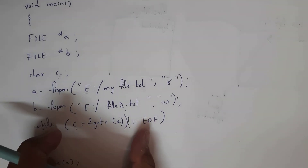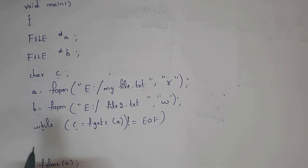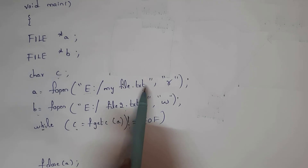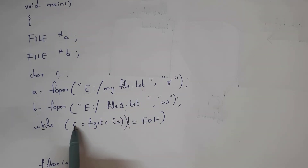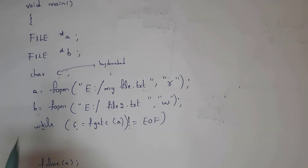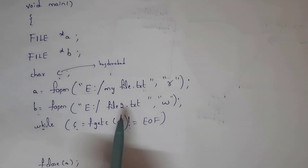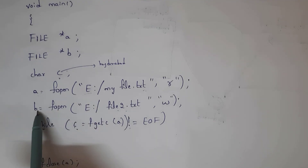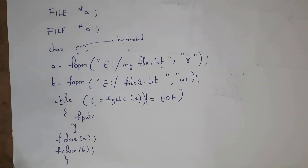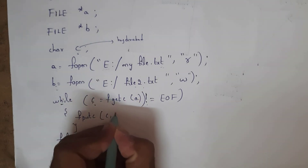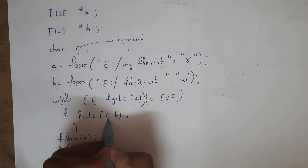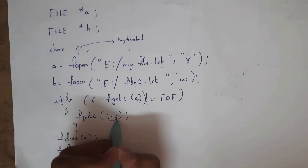By writing this line of code, data present in pointer variable a — that is, data in myfile.txt — is copied to character variable c. Now I want to copy text from character c to file2.txt, which is pointer variable b. For that purpose I write: fputc(c, b). This means whatever text is present in character variable c is copied to pointer variable b.